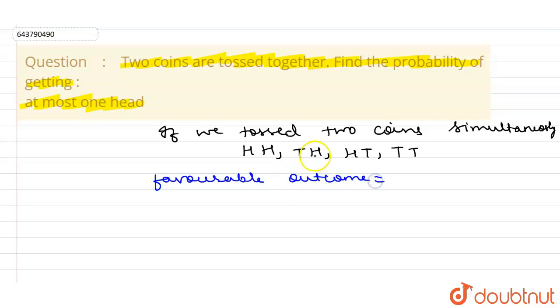So here it is only one head, so I take TH. Then here HT, and here no head. Because I have to take maximum one head, I can also take zero heads. So here it is TT, two tails.